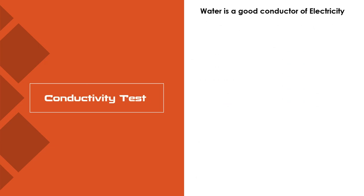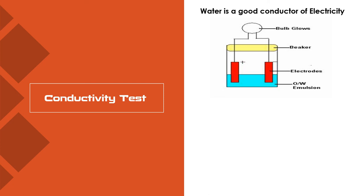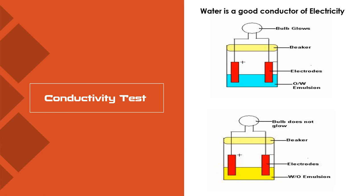Moving on to the conductivity test. Water is a good conductor of electricity. Take a beaker and add an oil in water type of emulsion. Place two electrodes in the beaker connected to a bulb through a wire. When the bulb glows, you can say the emulsion is oil in water type — because water is the continuous phase and conducts electricity. When the bulb does not glow, it is water in oil type, because oil is the continuous phase and cannot conduct electricity.